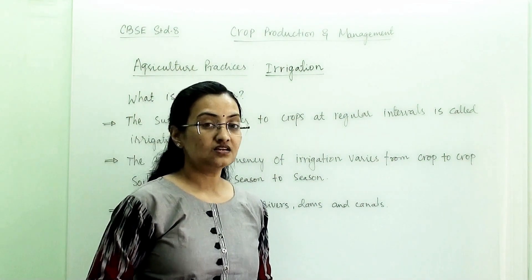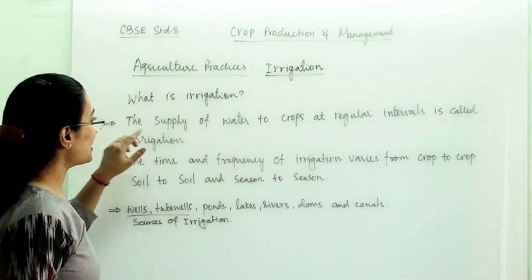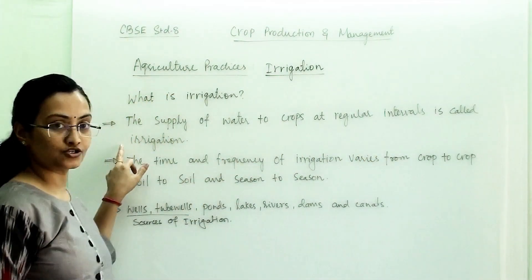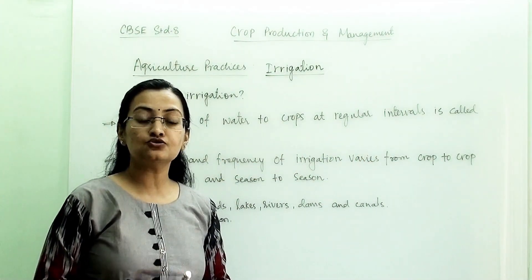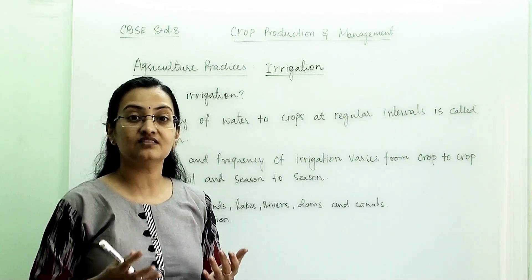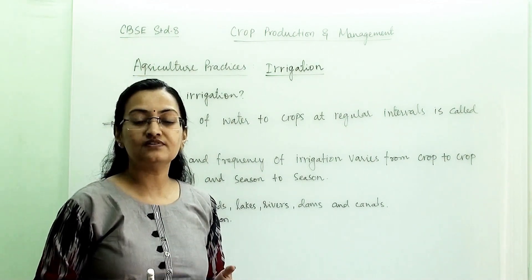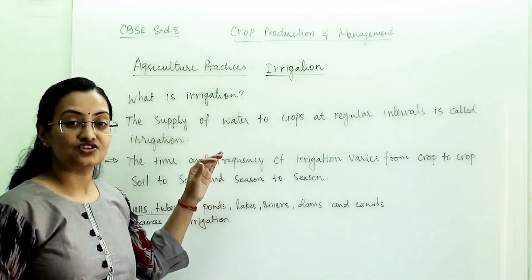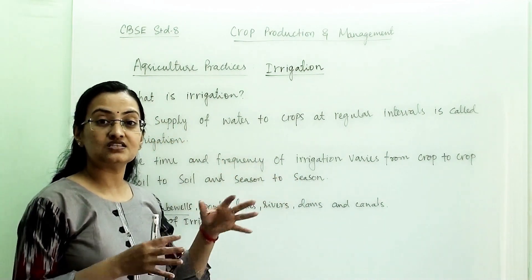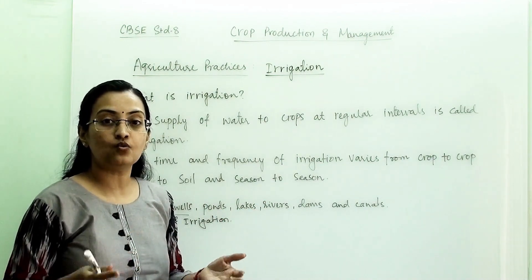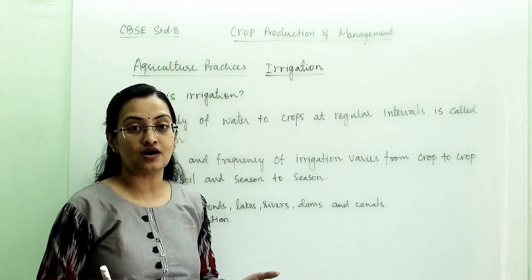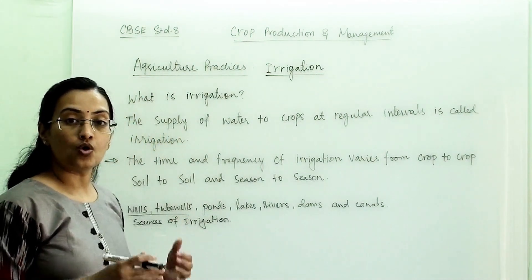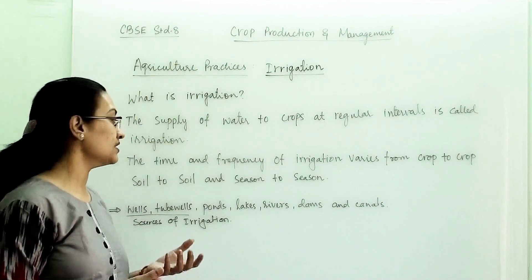Now let us learn about irrigation. What is irrigation? The supply of water to crops at regular intervals is called irrigation. Not all fields and farms are near a reservoir, and not all fields have wells. Irrigation is a system via which water is provided to each field and farm, so farmers will not face any water scarcity and will get water at regular intervals for their crops.